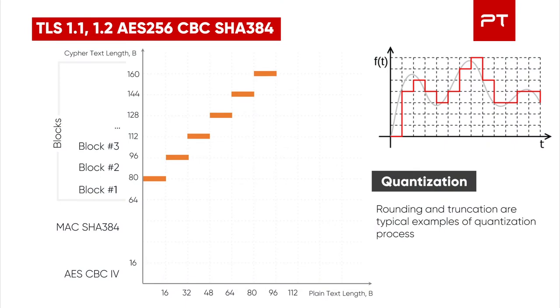Let's look at the graph. Here is a coordinate plane, as we used for encrypted custom TCP protocols. The y-axis reflects the number of bytes in the TLS protocol fragments, while the x-axis shows the number of unencrypted data that need to be transmitted. As you can see, the graph is stair-step — this is what we mean by quantization. Rounding and truncation are typical examples of the quantization process. One step equals the block size, which is 16 bytes. This graph starts at 64 bytes on the y-axis because HMAC with the SHA-384 hashing algorithm is 48 bytes, and the initialization vector is 16 bytes, so the sum is exactly 64.